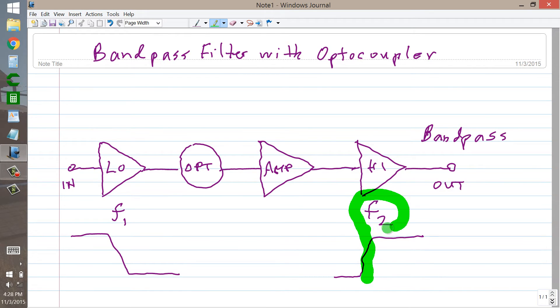That would be F2, and here, the low pass cutoff frequency right about there. The trick to this is that you need to have this frequency, F2, be considerably below the frequency, F1.